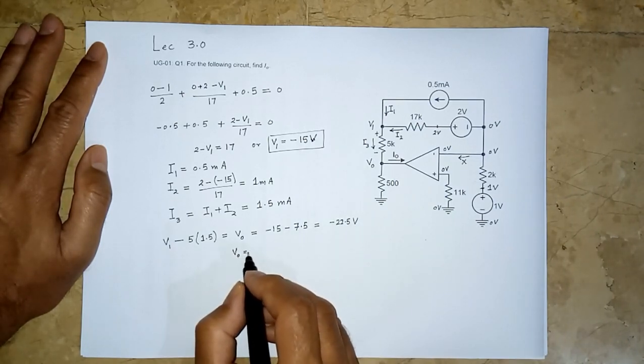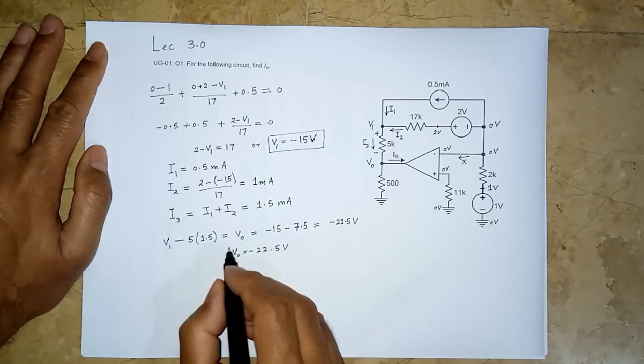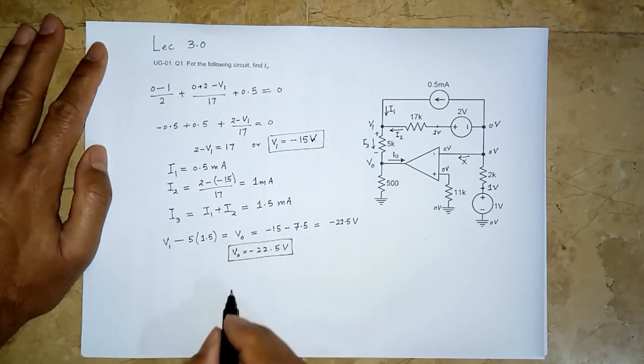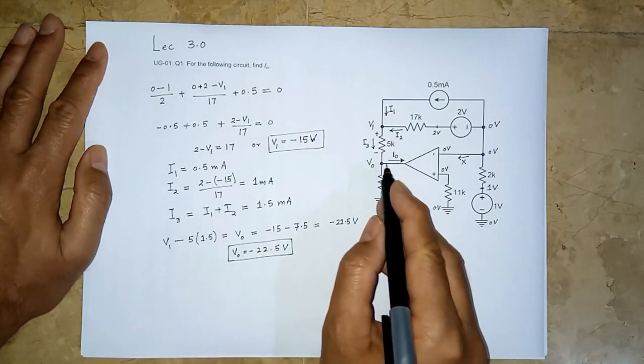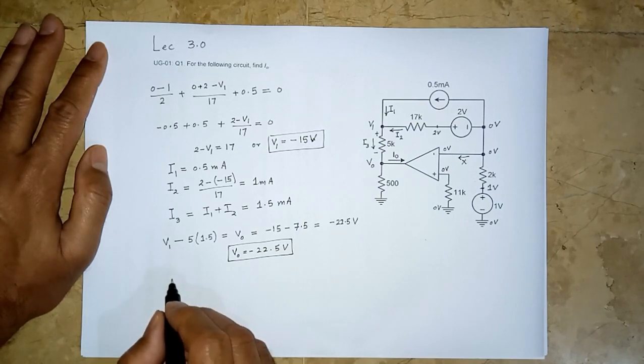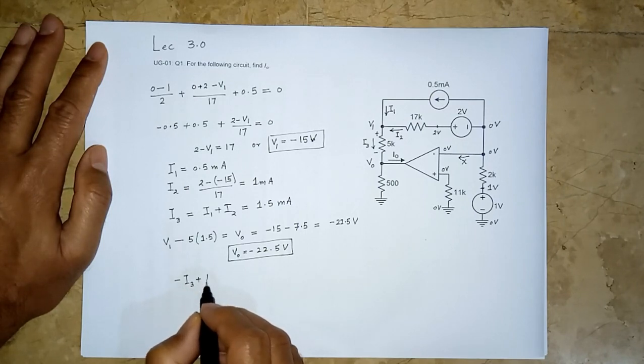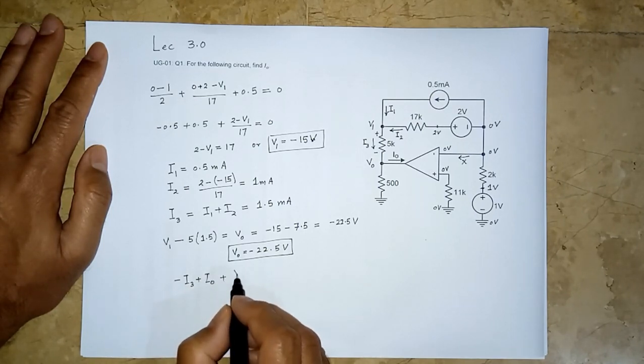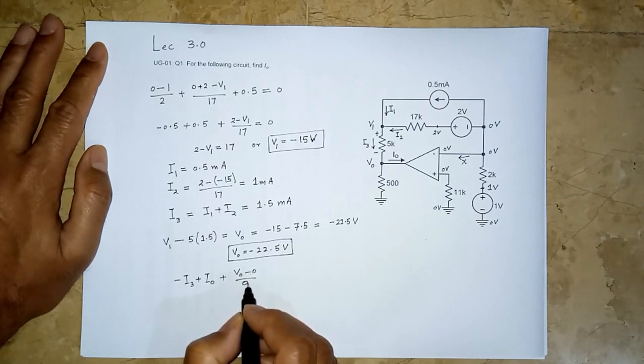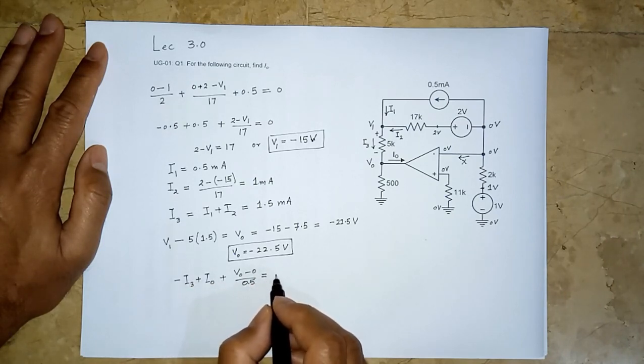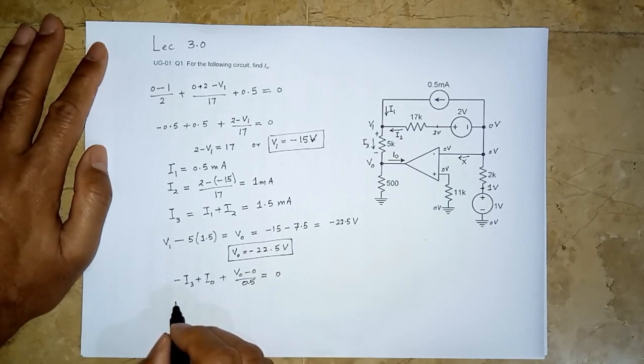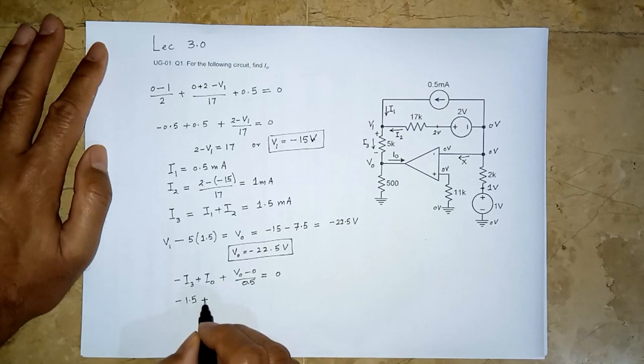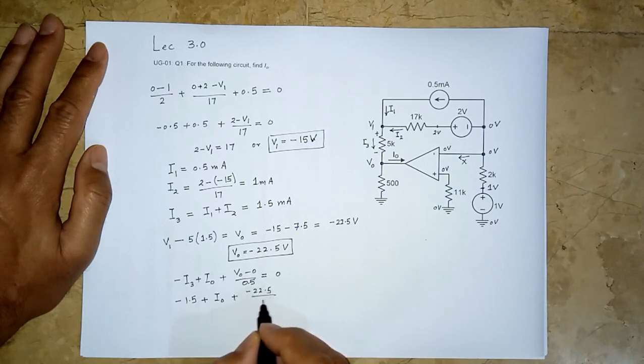v1 and v_o are mythically not to be found. What we need to find is i_o. So if we apply KCL here at this node v_o, we can very easily write minus i3 plus i_o plus v_o minus 0 over 0.5. v_o—we need each term to be in milliampere—so this is 0.5k. This is equal to 0. Minus i3, minus 1.5, plus i_o, plus v_o is minus 22.5 over 0.5.